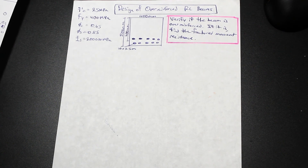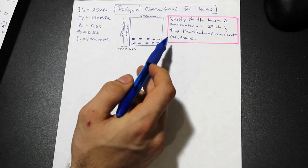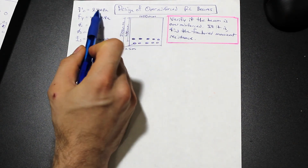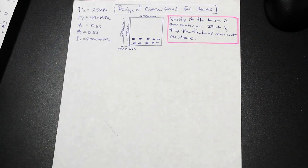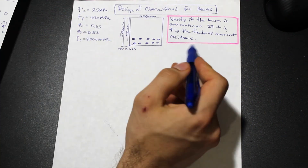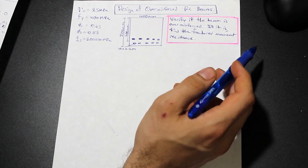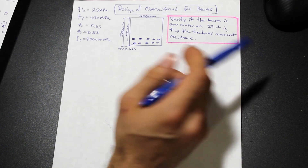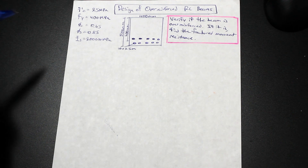We're going to do one question here to show you how to approach this. We have a beam with 10 25M bars, and we're given all the properties of the concrete and the steel. We're asked to verify if the beam is over-reinforced and, if it is, to find the factored moment resistance.